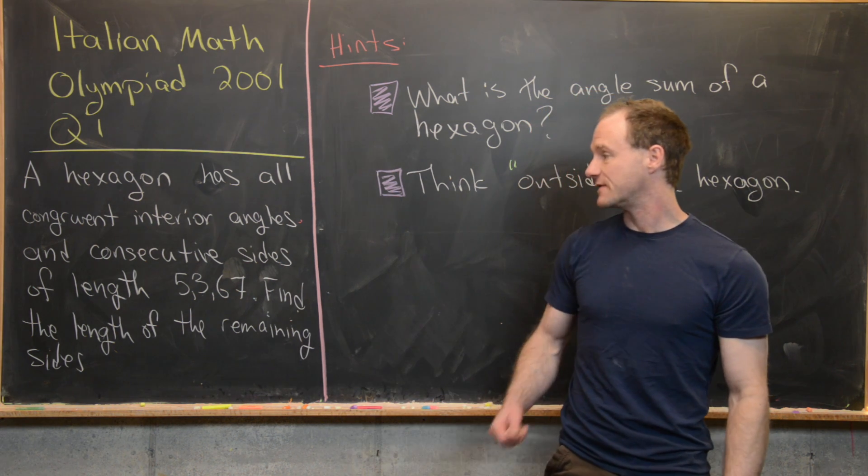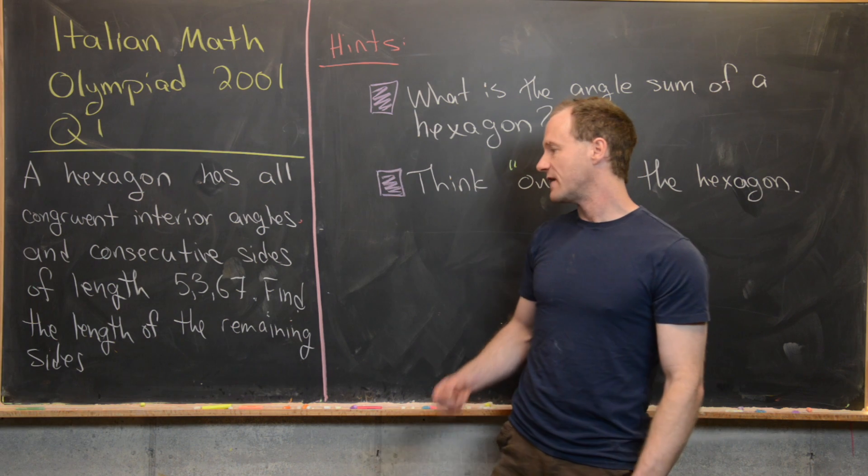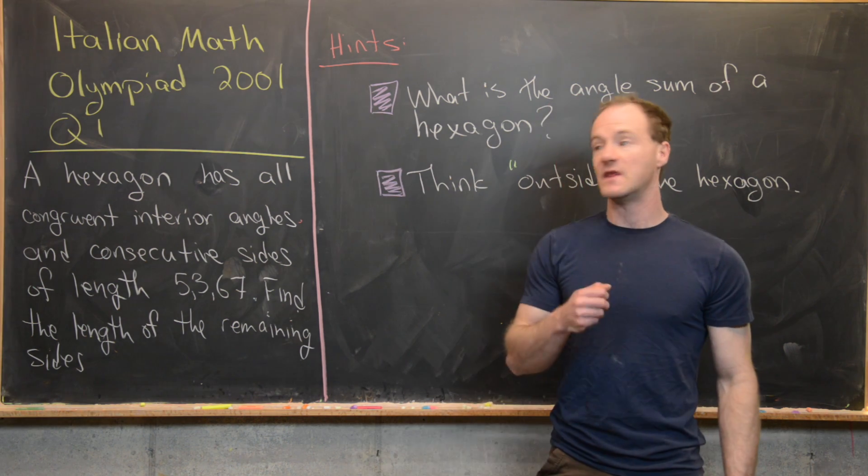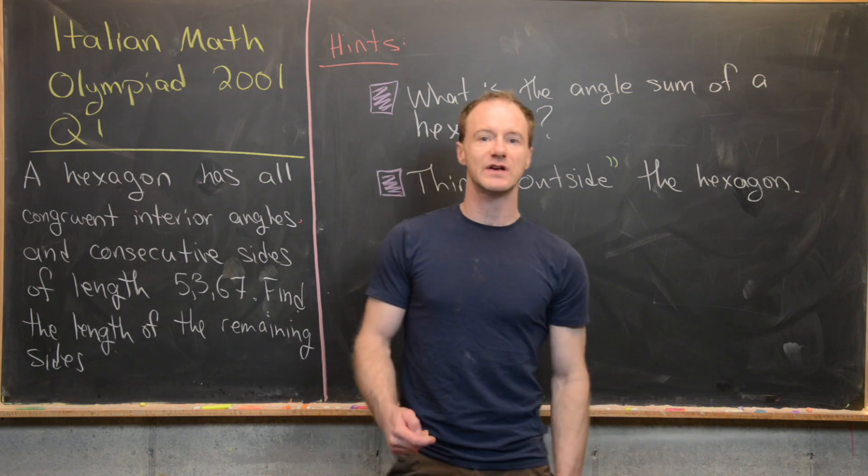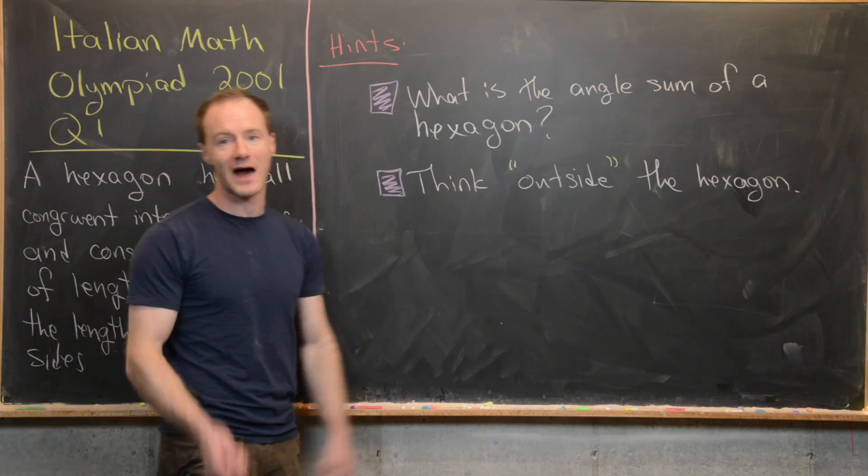and consecutive sides of length 5, 3, 6, 7, and then our goal is to find the length of the remaining two sides. I'm going to give you guys some hints to try the problem out a little bit before